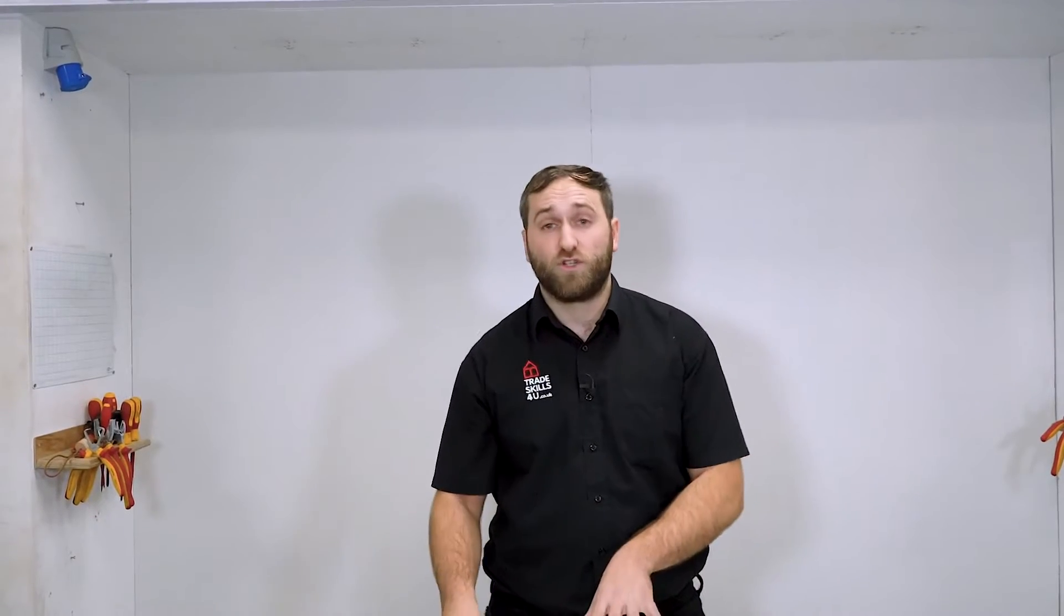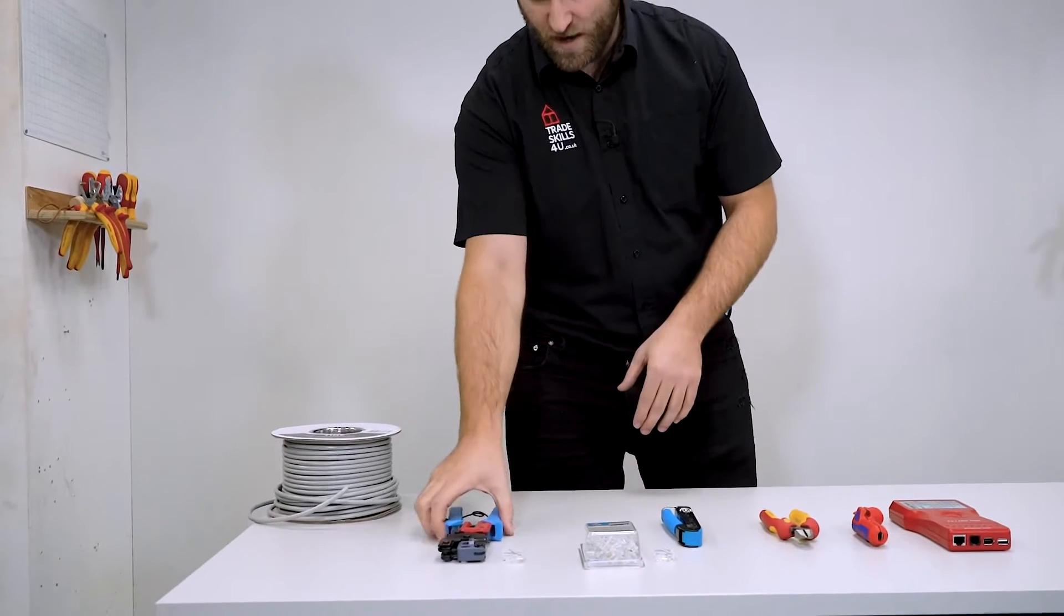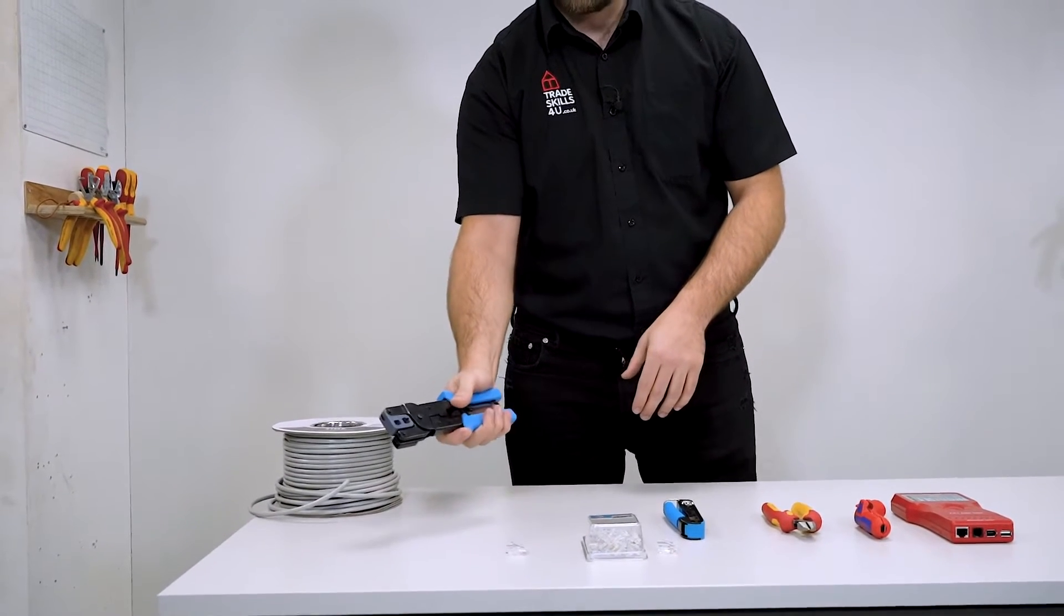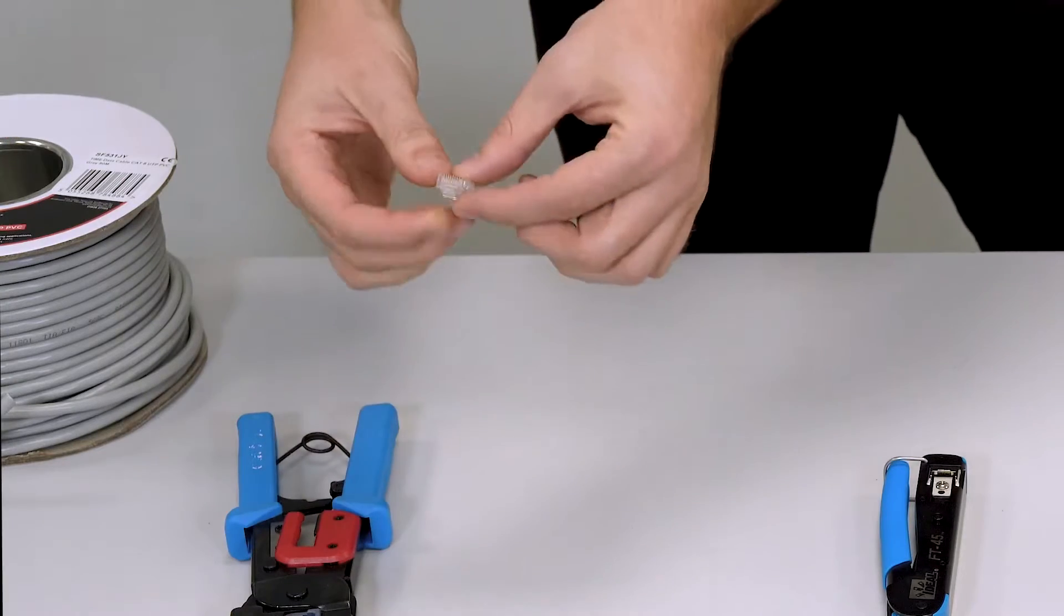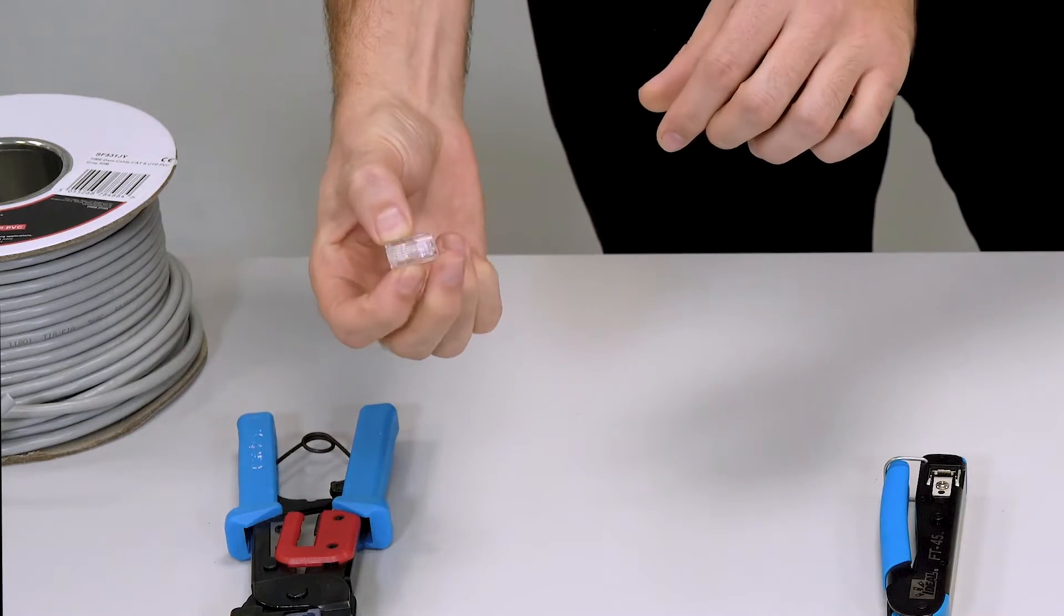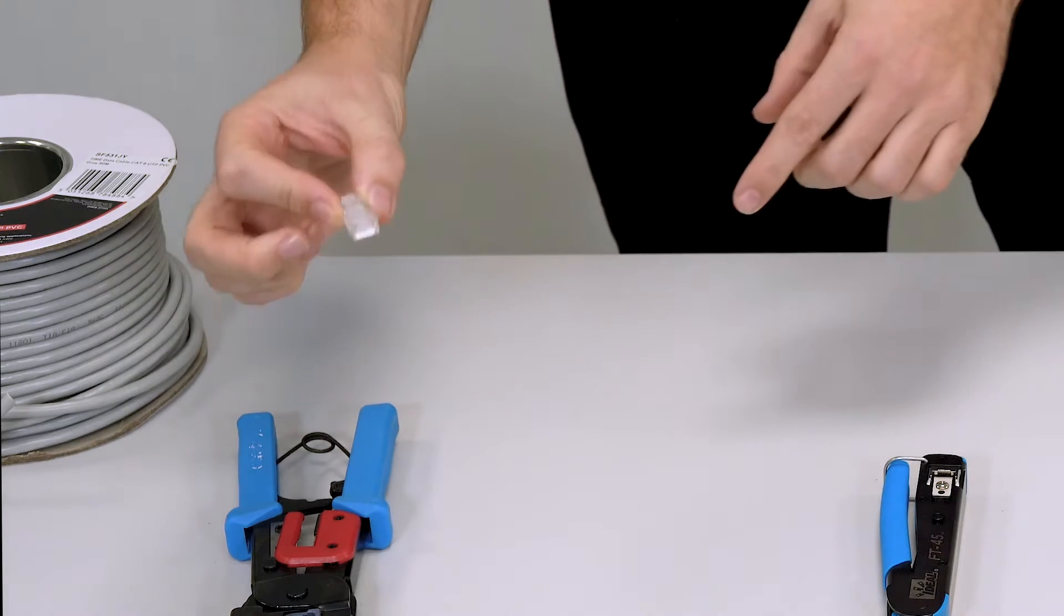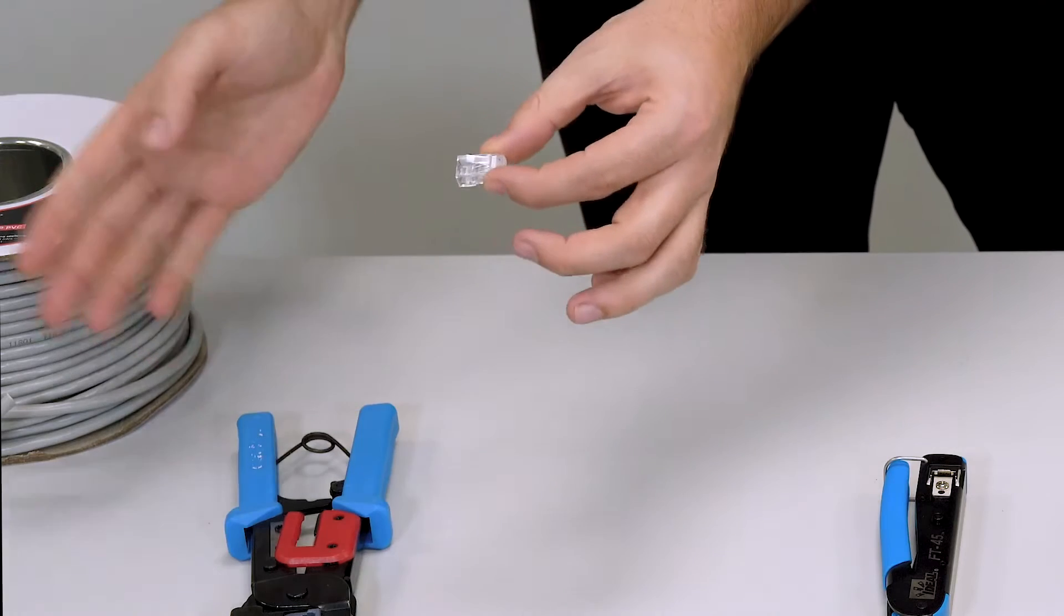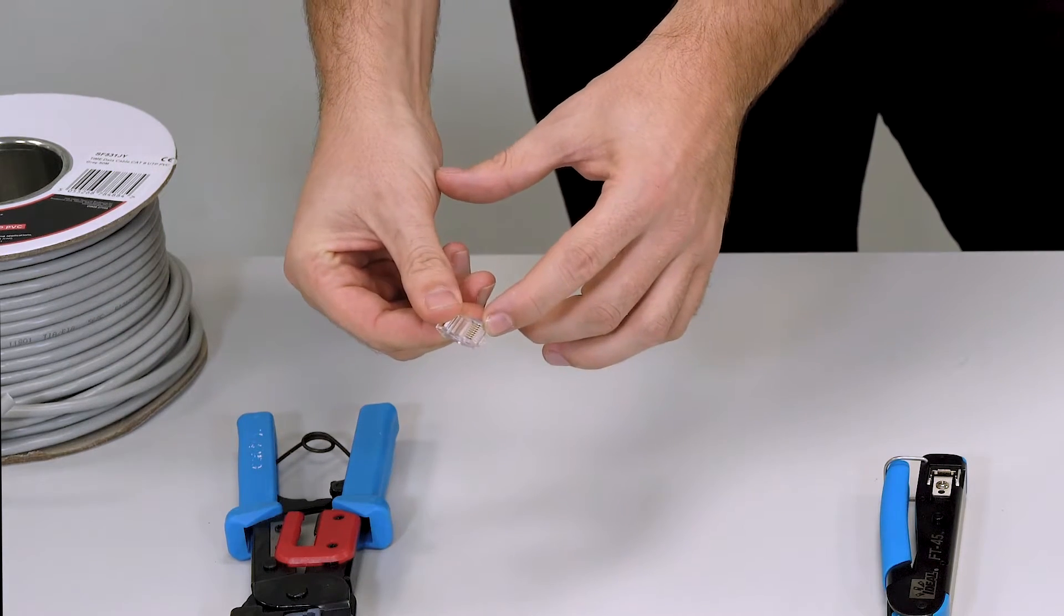Before we start, I want to show you the types of RJ45 plugs we're going to be using. First and foremost we have our crimping tool for RJ45. These are our bog standard RJ45 connectors. They have a sealed front at the top. We do have a problem with these from time to time where when we make off the cable, they don't always touch the connector end.